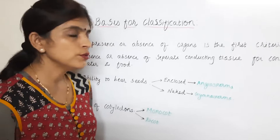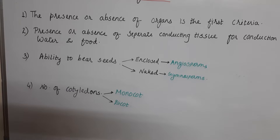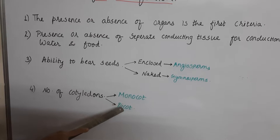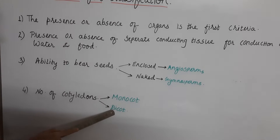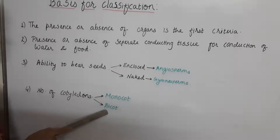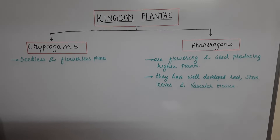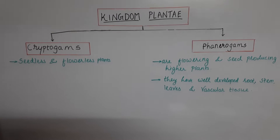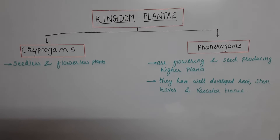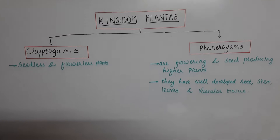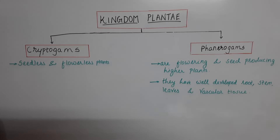Angiosperms and gymnosperms we are going to study in detail later. The next criteria is the number of cotyledons. If the seed has a single cotyledon, such plants are called monocots — mono means single. If the seeds have two cotyledons, such plants are called dicots — di means two. At a higher level of classification, depending on the presence or absence of flower, fruit, or seeds, Kingdom Plantae is classified into two groups: cryptogams and phanerogams.